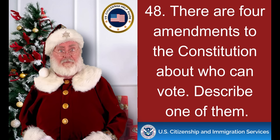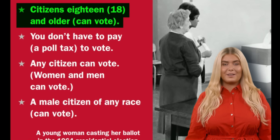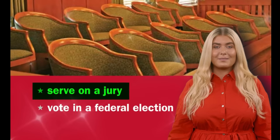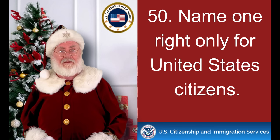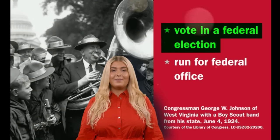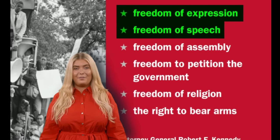There are four amendments to the Constitution about who can vote. Describe one of them. Citizens 18 and older can vote. What is one responsibility that is only for United States citizens? Serve on a jury. Name one right only for United States citizens. Vote in a federal election. What are two rights of everyone living in the United States? Freedom of expression. Freedom of speech.